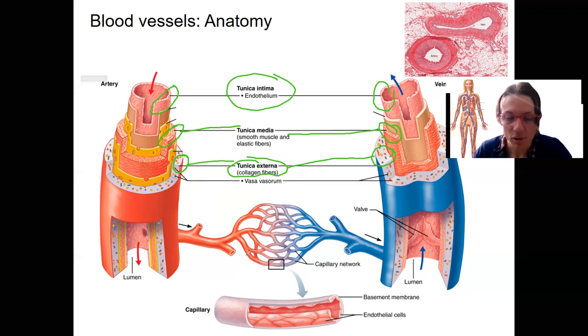And then I like this image because it also shows the cross section of the capillary, which really just has the endothelium, the endothelial cells, epithelial cells, and basement membrane is that areolar tissue that helps get to the stuff around it, mostly adipose tissue.